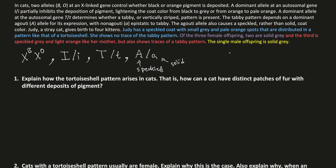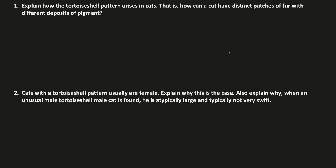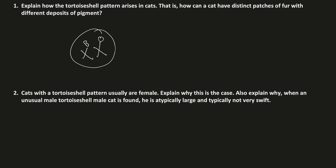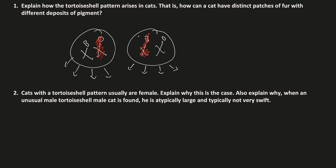Before figuring out genotypes, we answer a few questions. First: how does a tortoiseshell pattern arise in cats — how can we have distinct patches of fur with different pigment? Since the gene is X-linked, females have two X chromosomes. X chromosome inactivation, or dosage compensation, randomly inactivates one X chromosome differently in each cell. One cell might inactivate the X chromosome with the orange allele, so all cells from that line are black. In another cell, the X chromosome with the B allele is inactivated, so all cells from that line are orange. That's how you get the different color patches.